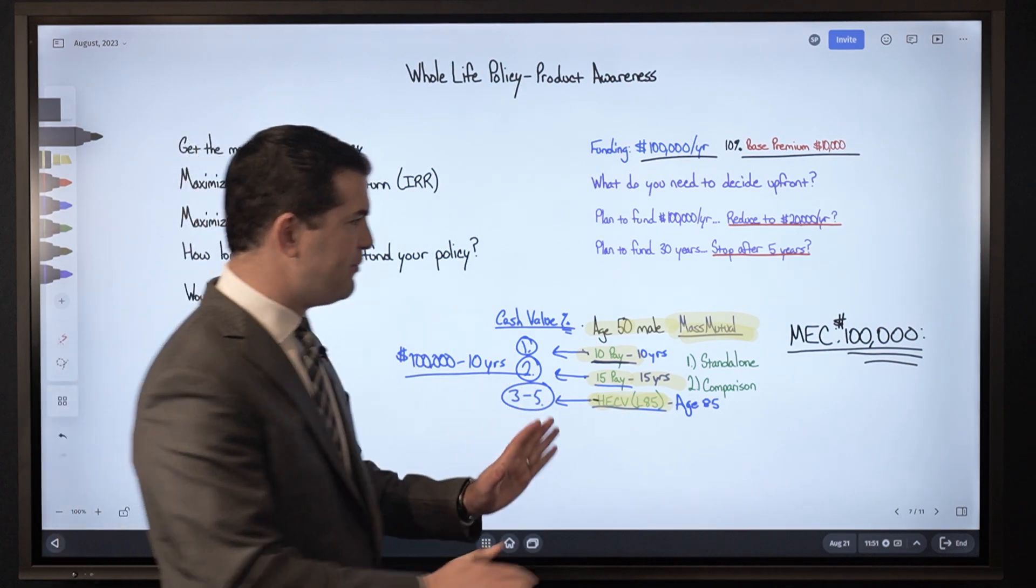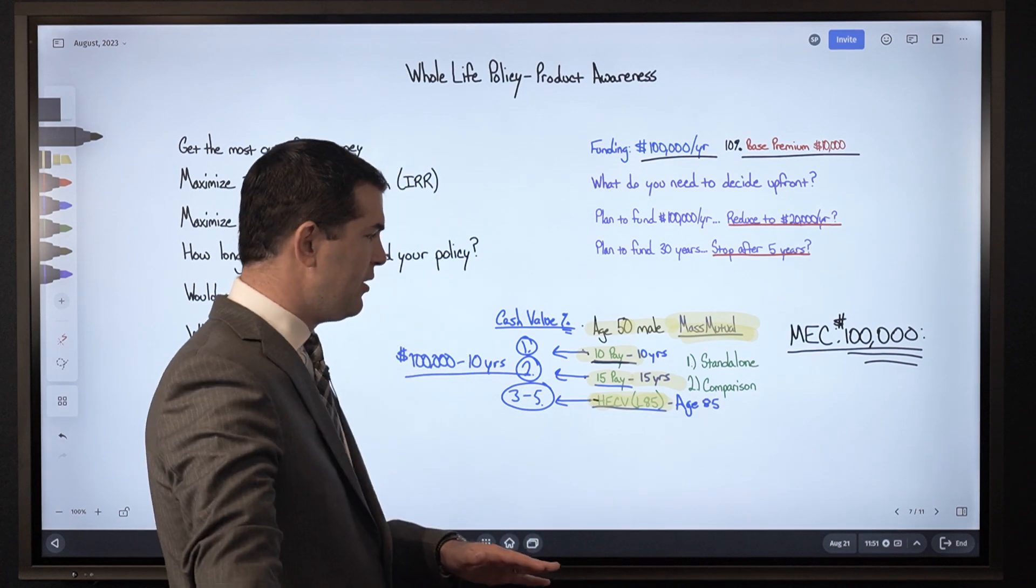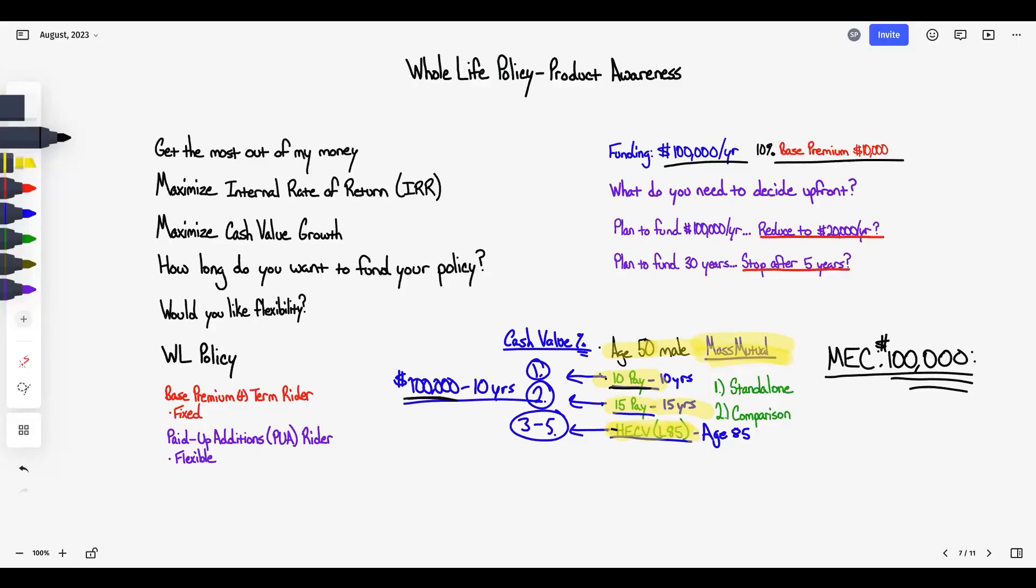We can see, okay, take this MEC talk and all this complicated stuff out. If I pay this much money in for 10 years, what's the first year cash value and what does the first year death benefit look like with these three options side-by-side?